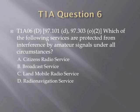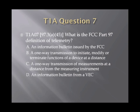Question 6. Which of the following services are protected from interference by amateur signals under all circumstances? A. Citizens radio service. B. Broadcast service. C. Land mobile radio service. Or D. Radio navigation service. Question 7. What is the FCC Part 97 definition of telemetry? A. An information bulletin issued by the FCC. B. A one-way transmission to initiate, modify, or terminate functions of a device at a distance. C. A one-way transmission of measurement at a distance from the measuring instrument. Or D. An information bulletin from a VEC.